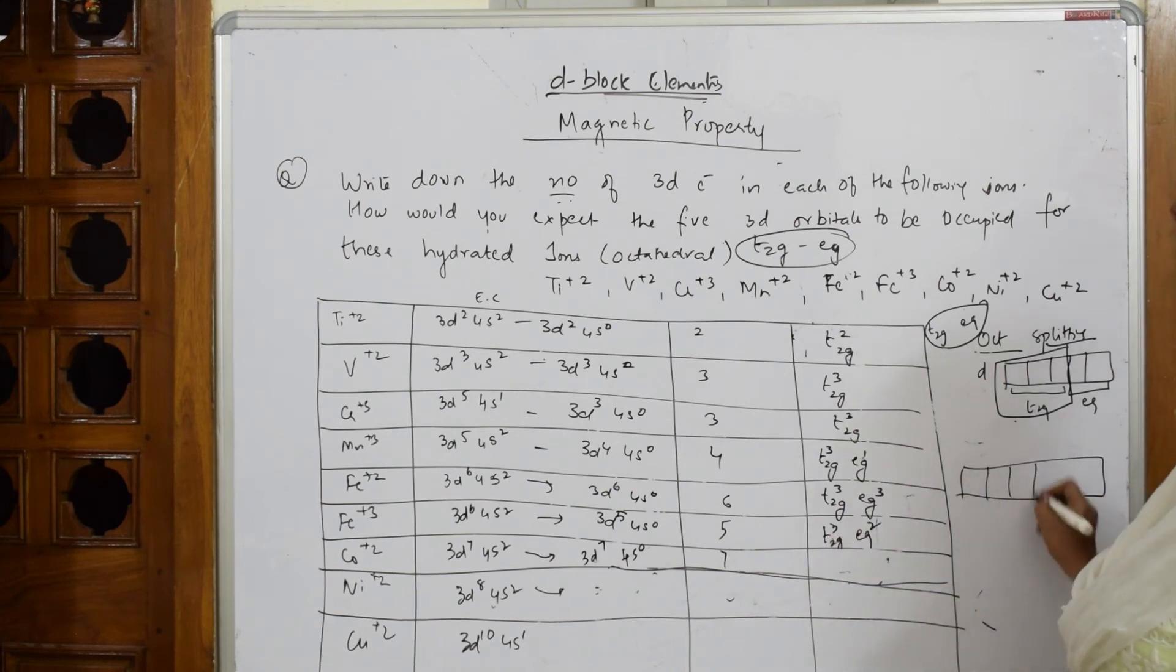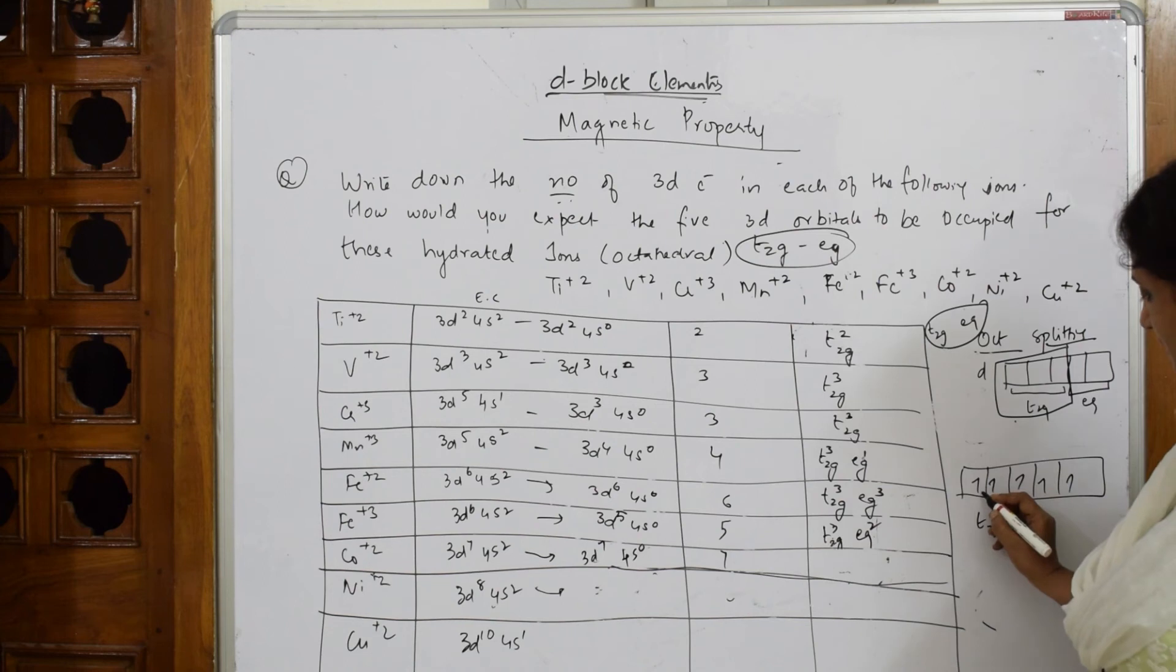No. This is your 1, 2, 3, 4, 5. Till here, I just took T2G like this. And EG 2 like this. Now, what happened? I have 7, isn't it? Now, that electron will come and fill the T2G center. The second electron.